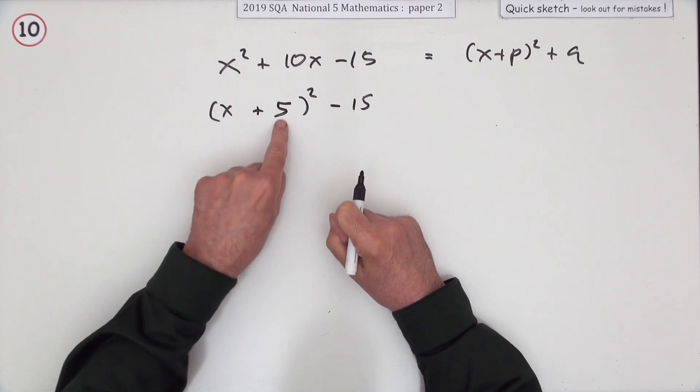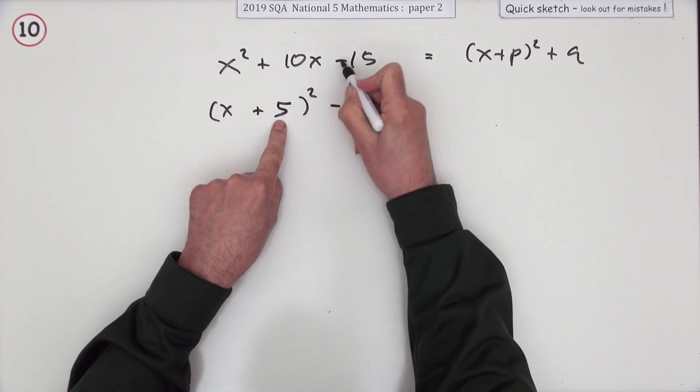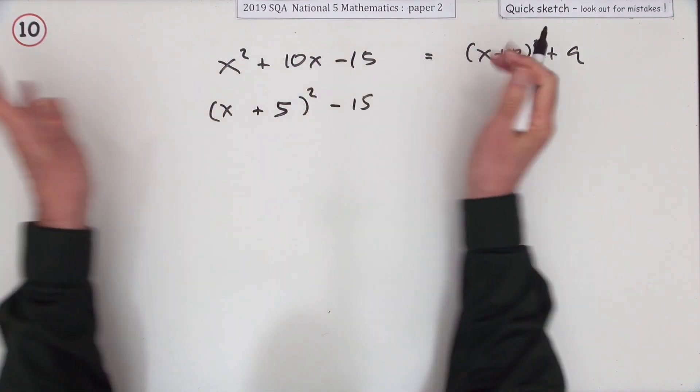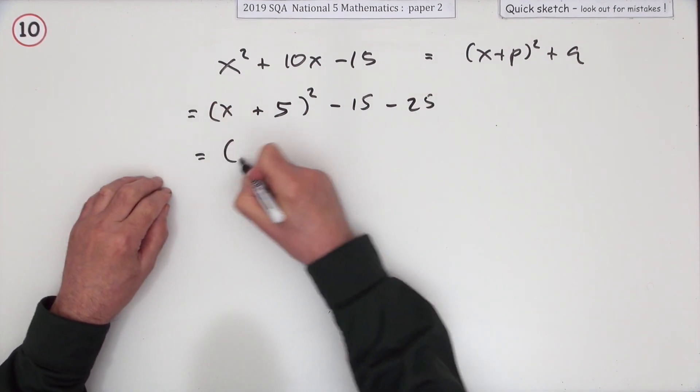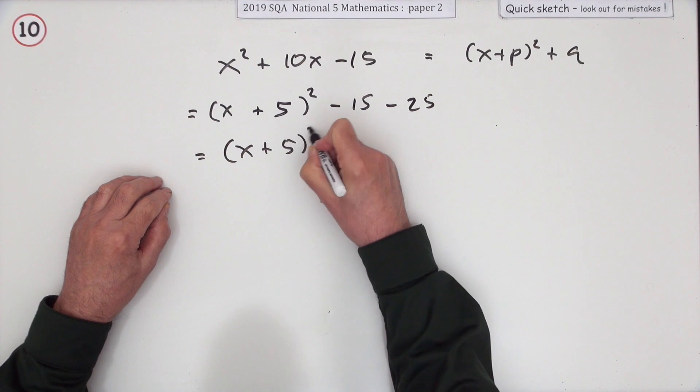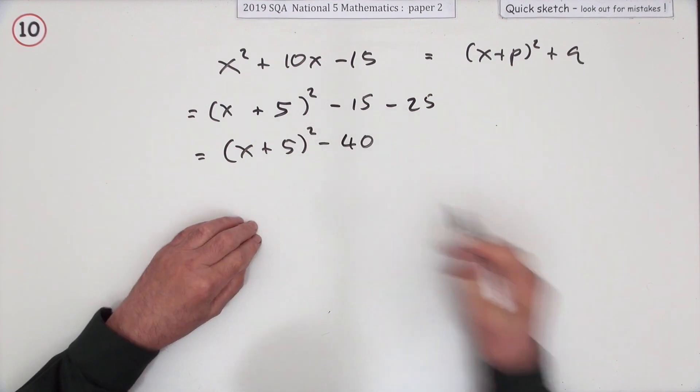The only problem is plus five there—when you square it, it gives a twenty-five, and there's no twenty-five there. So I have to take twenty-five away. So you've got (x + 5)² - 40.